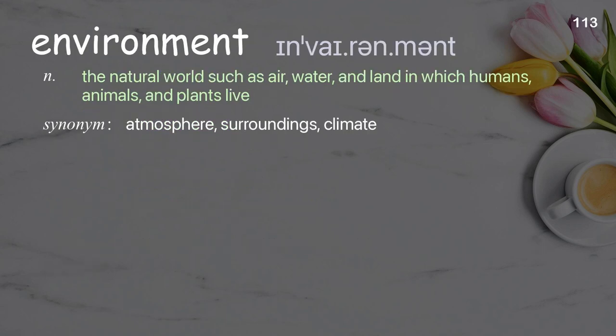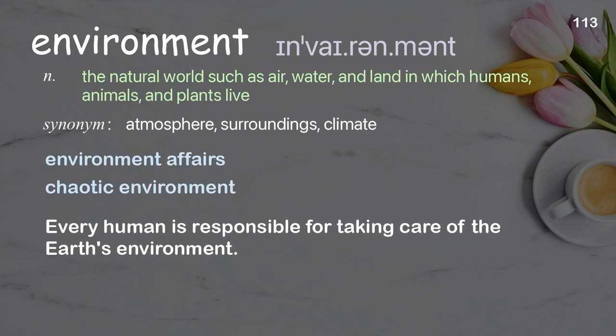Environment: The natural world such as air, water, and land in which humans, animals, and plants live. Examples: Chaotic environment. Every human is responsible for taking care of the Earth's environment.